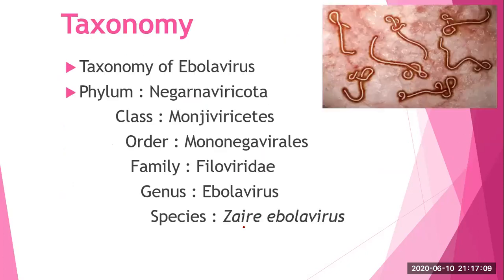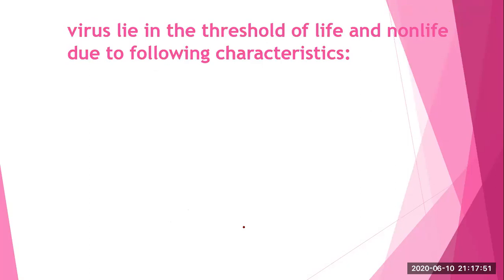Now we read about the taxonomy of a virus. If we go for the taxonomy of Ebola virus: phylum — Negarnaviricota; class — Monjiviricetes; order — Mononegavirales; family — Filoviridae; genus — Ebolavirus; species — Zaire ebolavirus. That is the taxonomy of Ebola virus.